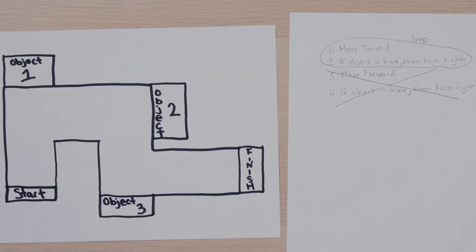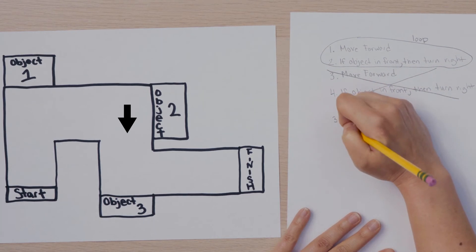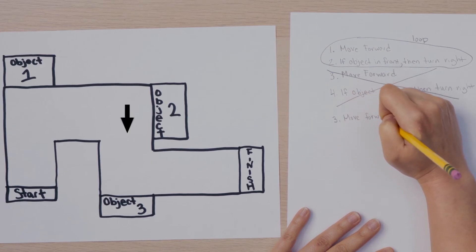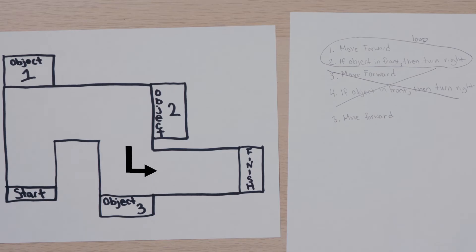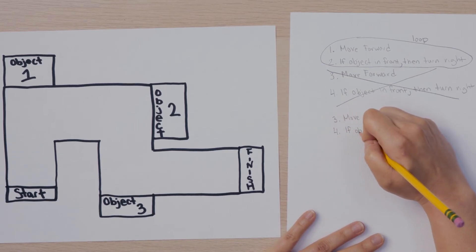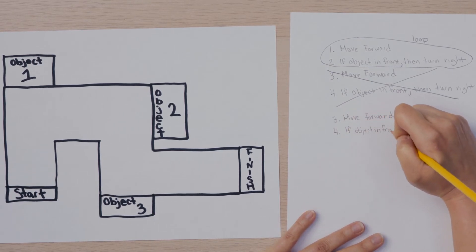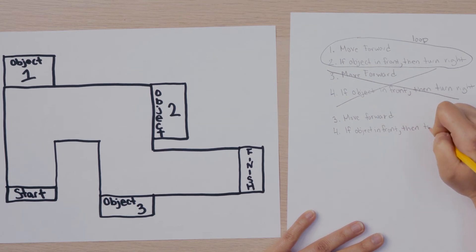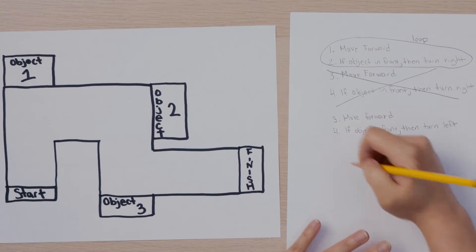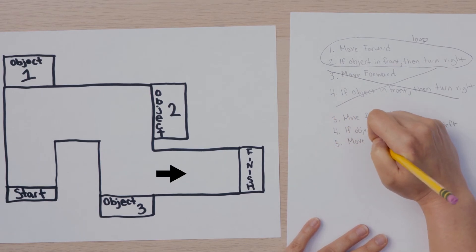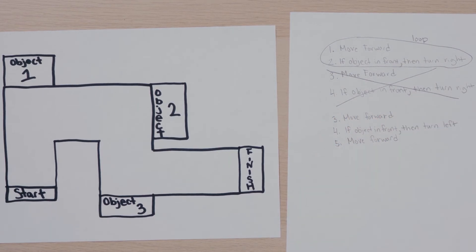What will the bot need to do now? The bot will move forward — write 'Move Forward.' Next, the bot will come to another wall, so there will be another conditional. This time, if the bot senses an object in front of it, it will turn left. Write 'if object in front, then turn left.' Finally, the bot will move forward until it crosses the finish — write 'Move Forward.'